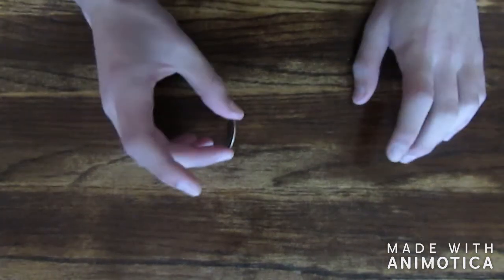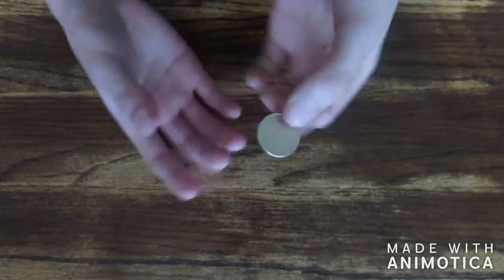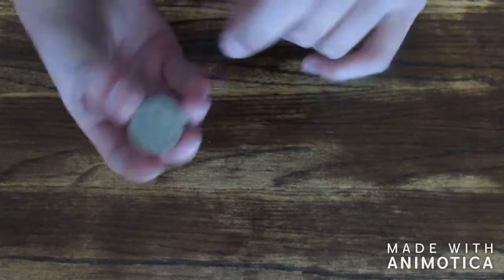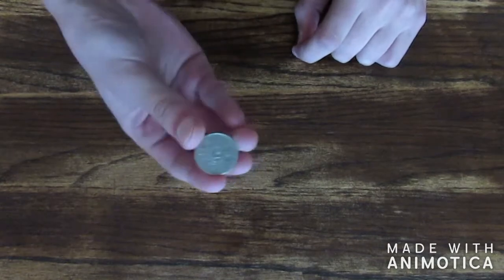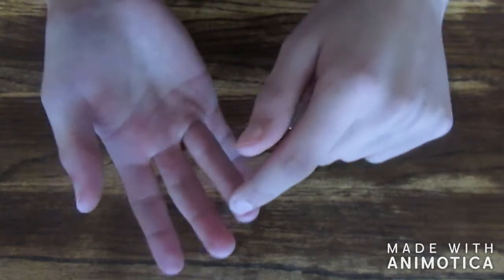So basically what you're gonna do for this vanish is you're gonna need a quarter or some sort of coin. For me it's easiest to just use a quarter. So basically you're gonna have these two fingers, your index finger, your middle finger, and your ring finger, and they're gonna be together like this.